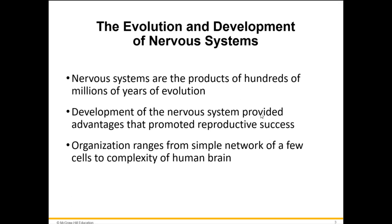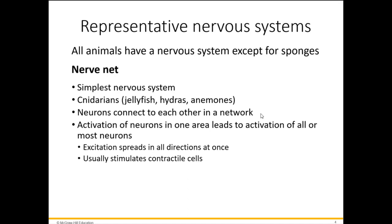We'll look at representative nervous systems across different animal types. All animals have a nervous system except sponges. Sponges are only at a cellular level of organization, not a tissue level — they are considered animals but lack a nervous system. Everything else does have a nervous system. The nerve net is the first and simplest type.